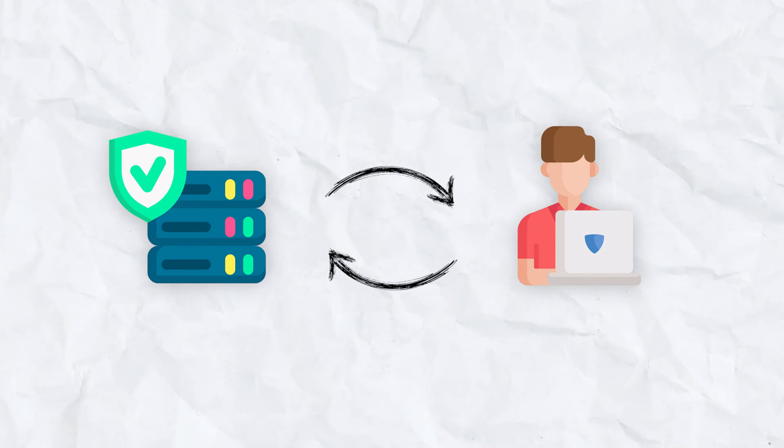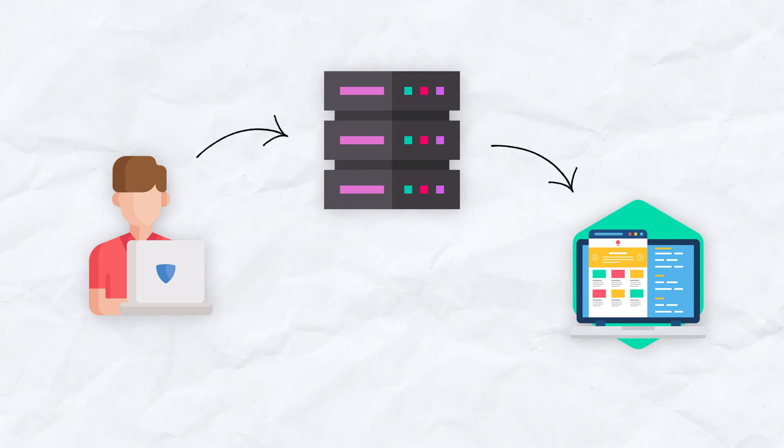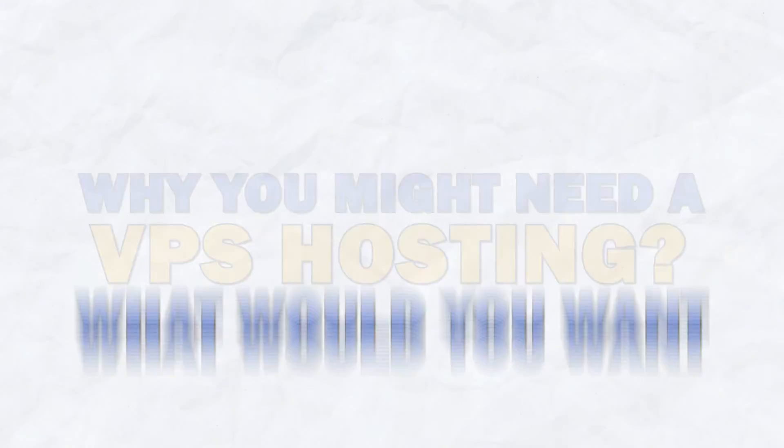When your speeds start to slow and you get more traffic, it might be time to switch to a private server. A private server is just a portion of a server set aside for your own use — there are still others using the same computer, but you have a dedicated part that is just for you. Lastly is the dedicated server, which is a complete server for your use only. Generally, as you go up in the chain you'll have more security and privacy features included.